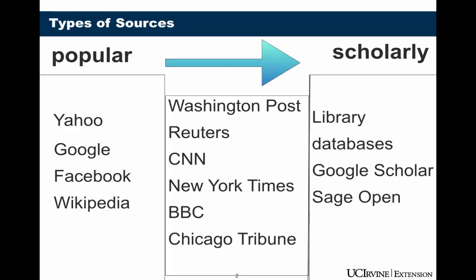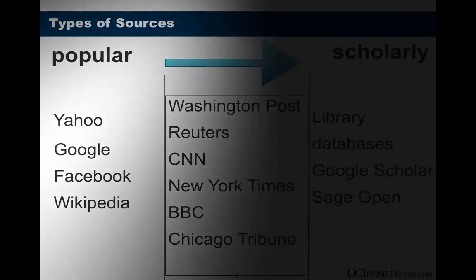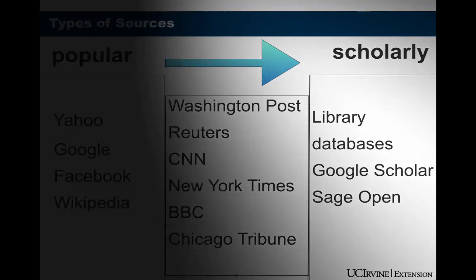We've already talked about the difference between popular sources and scholarly sources. On the left here are some examples of popular sources, and as we move to the right, the sources get more scholarly. On the far right, we have the most scholarly sources: the library databases, Google Scholar, and Sage Open.